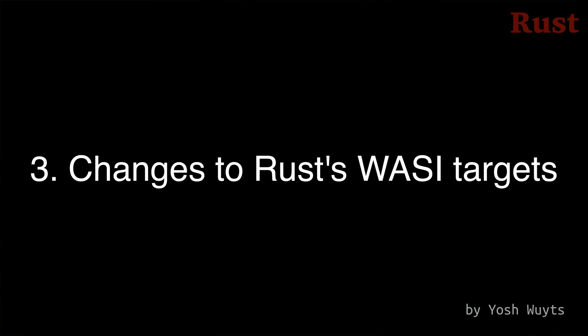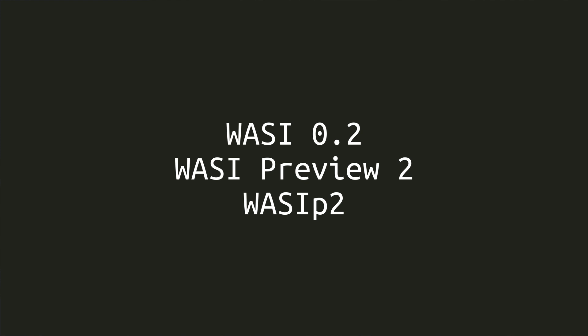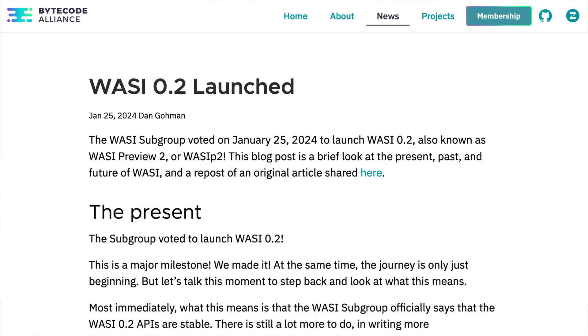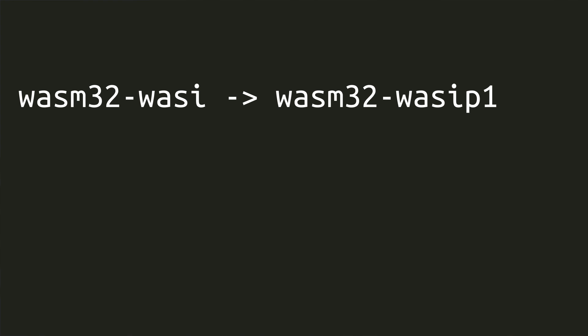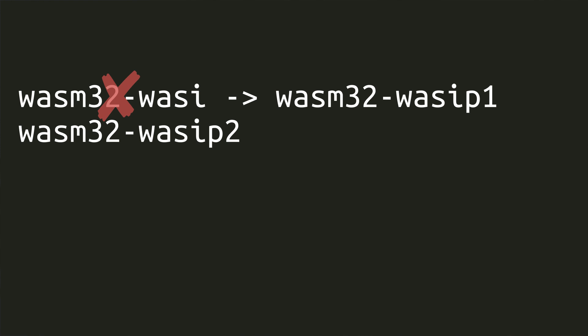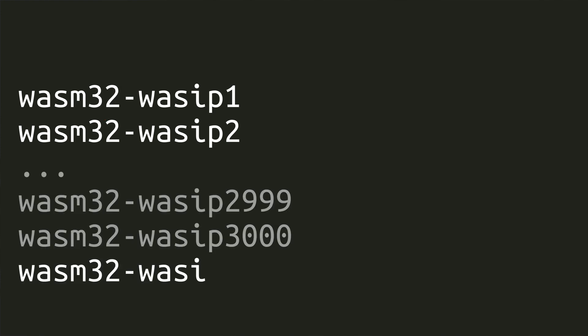Number 3: There have been some changes to Rust's WASI targets. This is due to WASI 0.2 being recently stabilized on January 25th. WASI 0.2 is also known as WASI Preview 2 or WASI P2 for short. There's a Bytecode Alliance blog post about WASI 0.2 explaining the new approach to APIs and component composability. In version 1.78, the existing Tier 2 WASM32-WASI target is getting an alias WASM32-WASI-P1, meaning Preview 1, and a new Tier 3 target WASM32-WASI-P2, or Preview 2, is being added. The original target will be removed in Rust 1.84, released January 5th, 2025, making way for it to eventually return as the 1.0 version of the target.